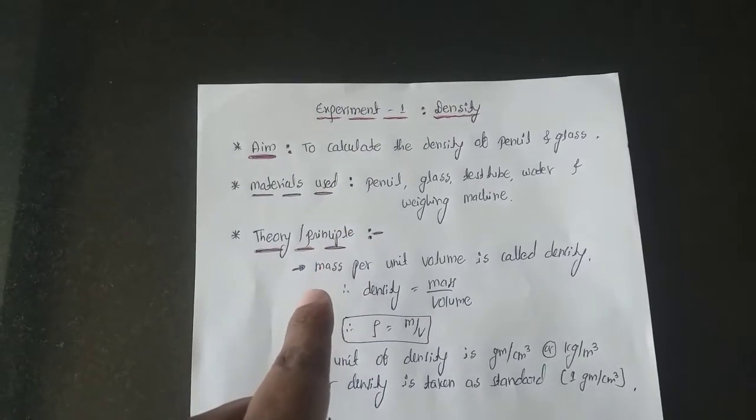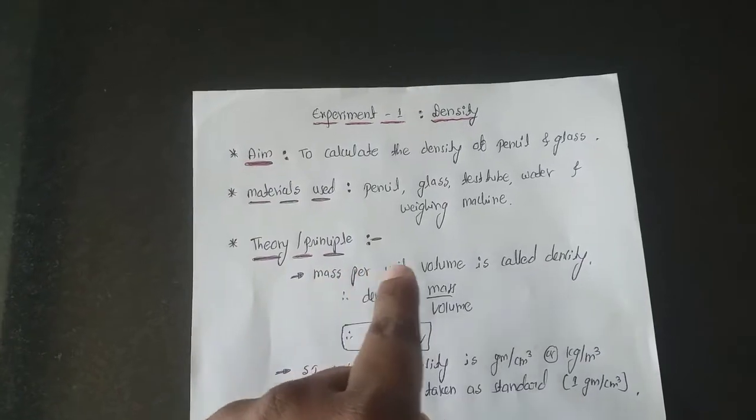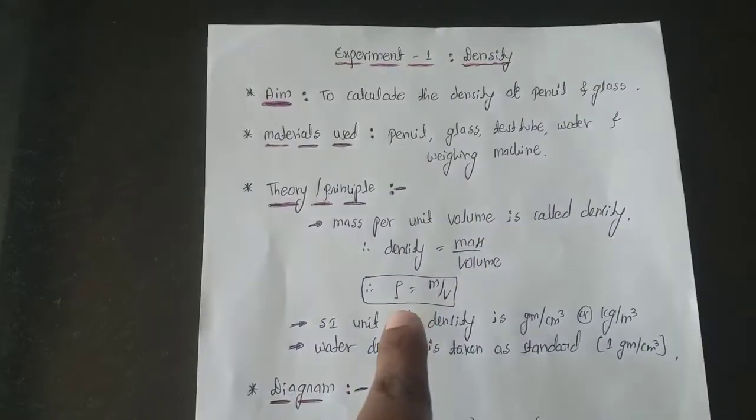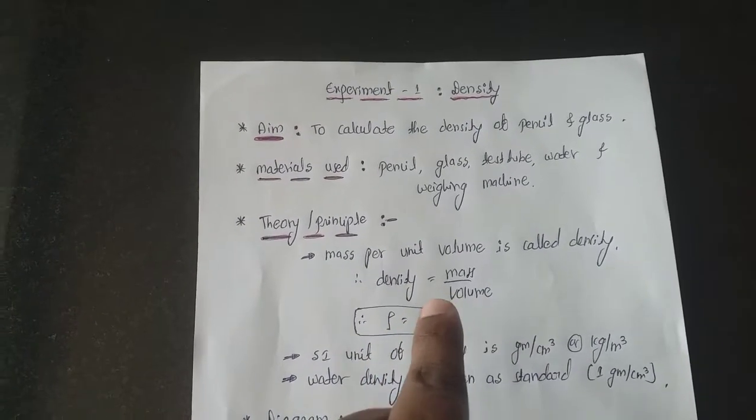Next you have to write the theory or principle of that experiment. Here the theory part is mass per unit volume is called density, so the density formula is mass by volume. The ρ is how we indicate density, so ρ equals to M by V, mass by volume.